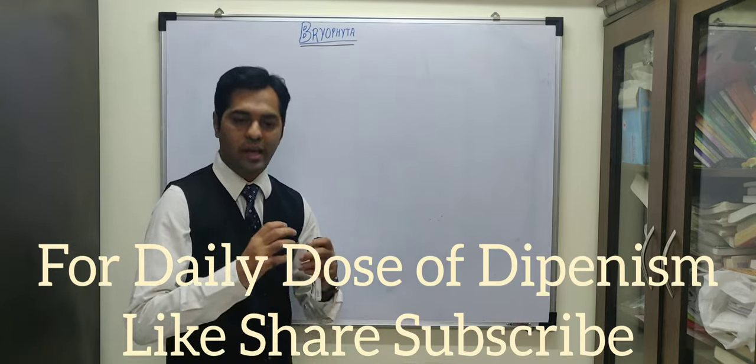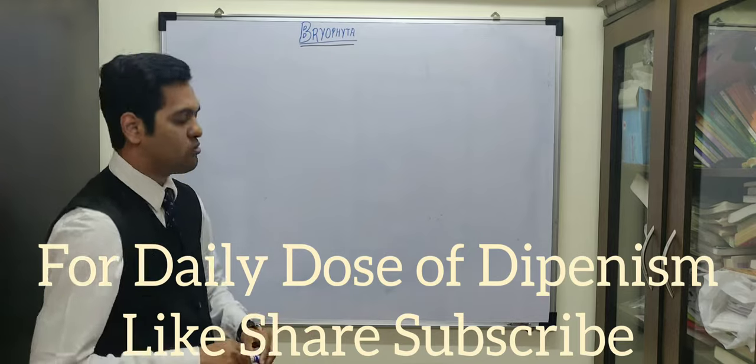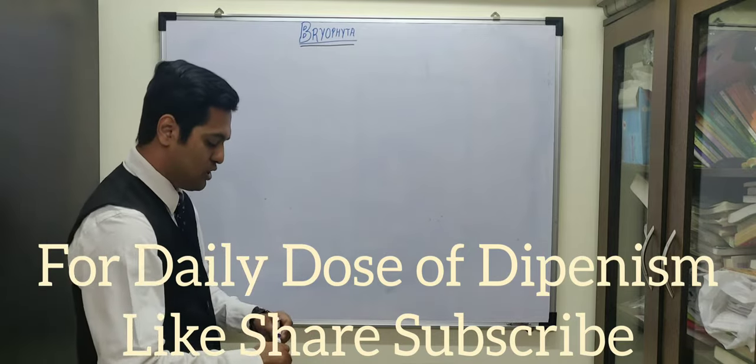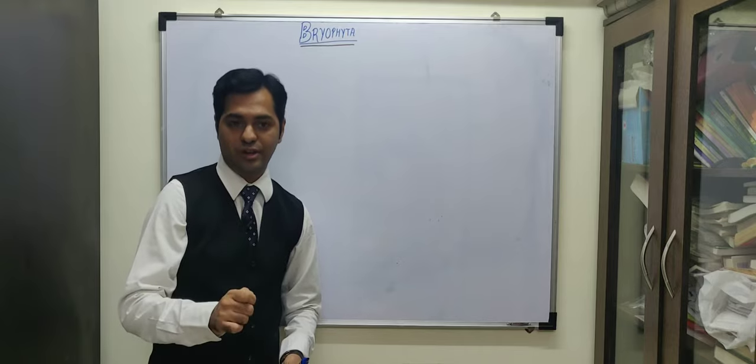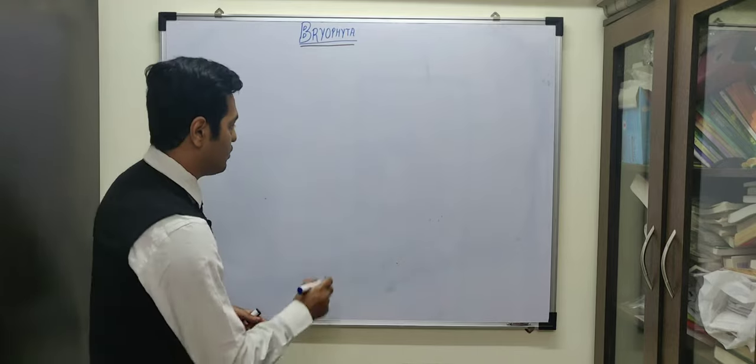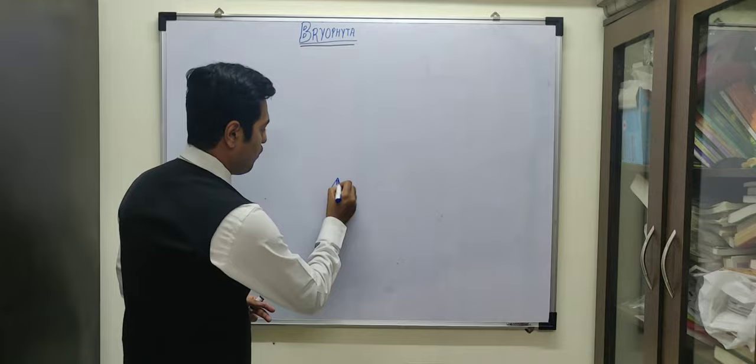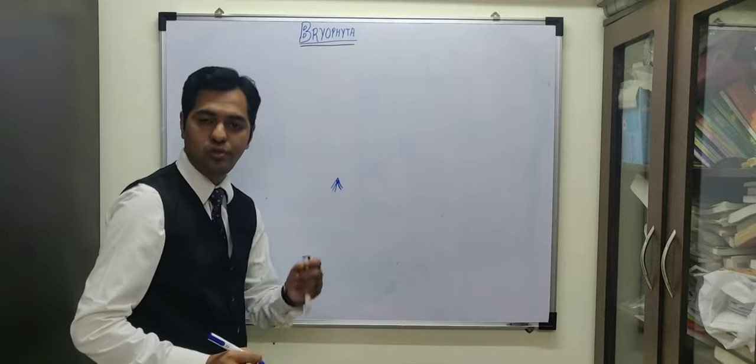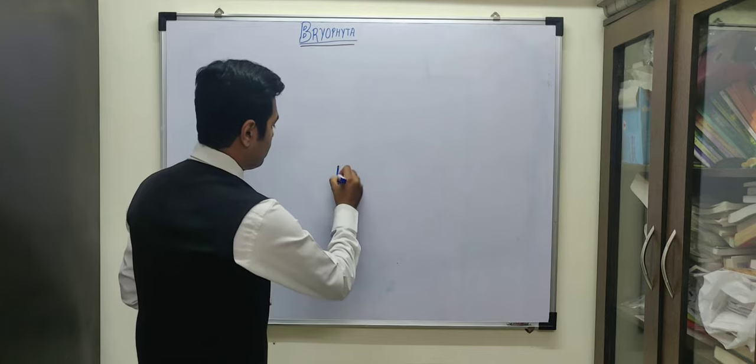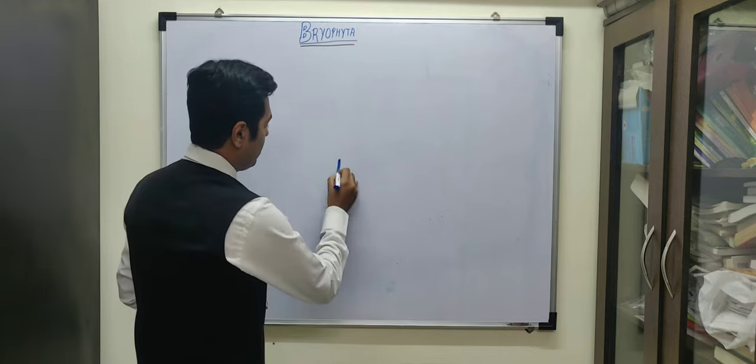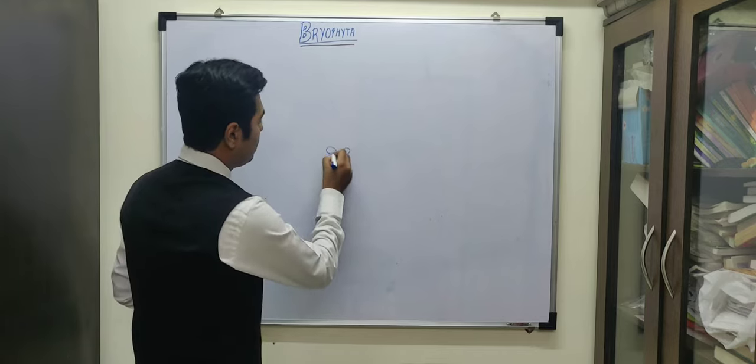I also want to explain diagrammatically the life cycle. As we have mentioned, the dominant generation is the gametophytic generation. The gametophytic generation consists of false roots, the rhizoids, then stem-like structure and leaf-like structures.